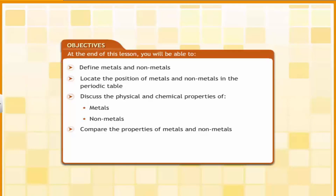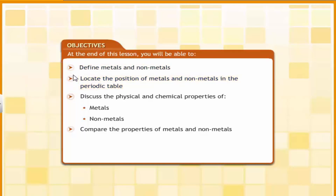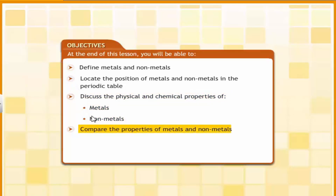At the end of this lesson, you will be able to define metals and non-metals, locate the position of metals and non-metals in the periodic table, and discuss and compare the physical and chemical properties of metals and non-metals.